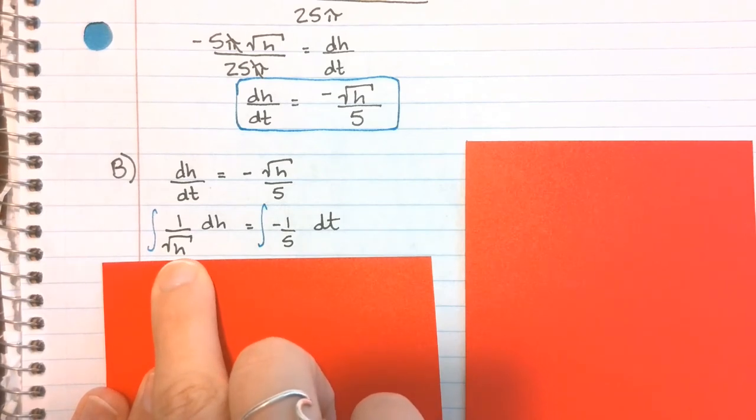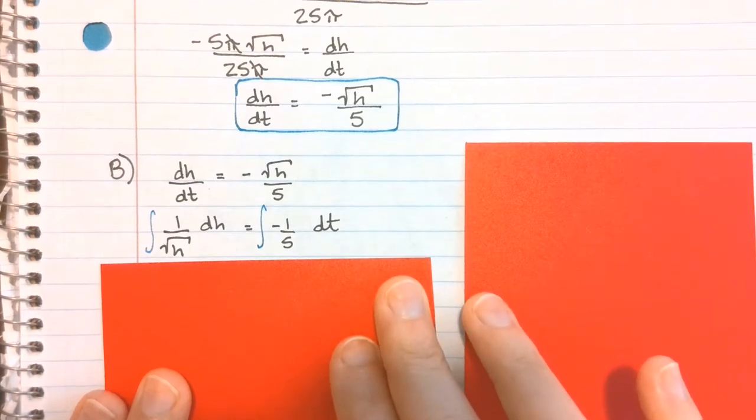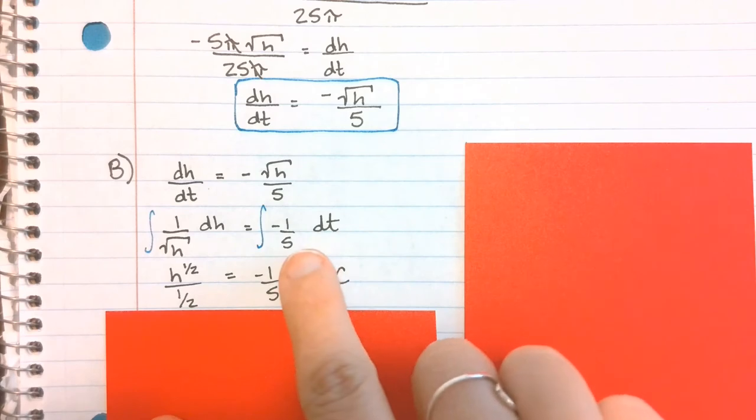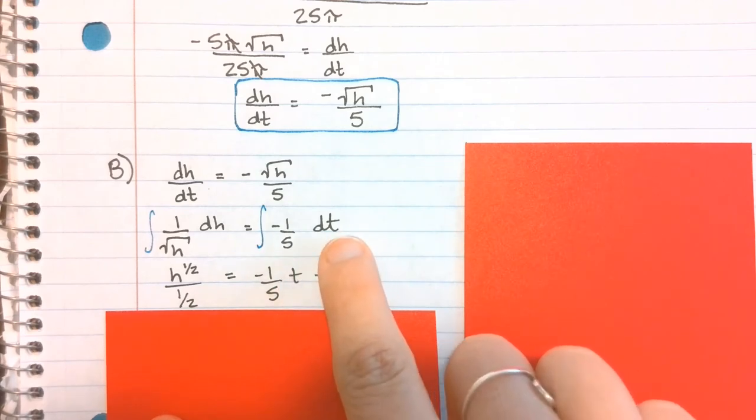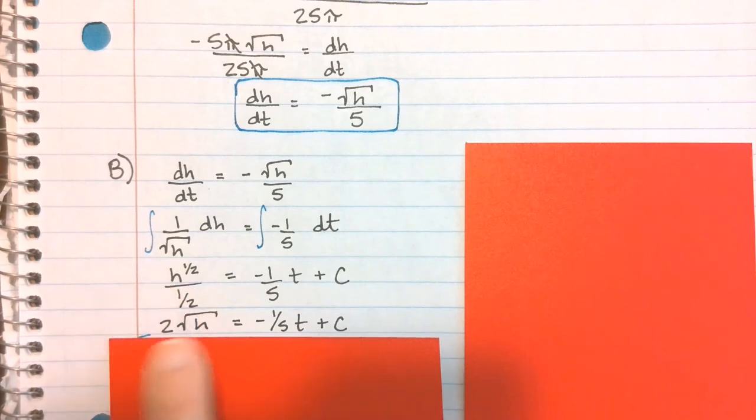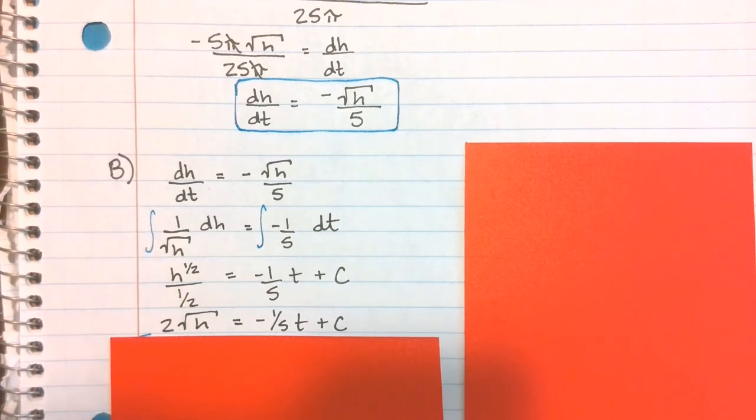On the left side, I'm using the power rule. Since this is h to the negative 1/2, it's going to end up being h to the positive 1/2 over 1/2. On the right side, since we're integrating with respect to t, I'll end up with negative 1/5 t plus c. If I want to clean this up, I multiplied by the reciprocal and wrote h to the 1/2 as √h.